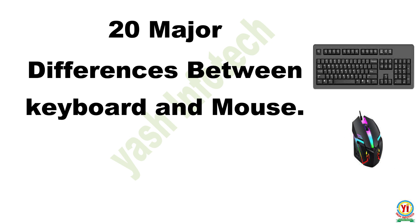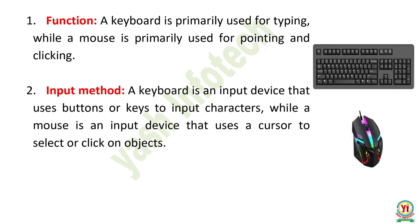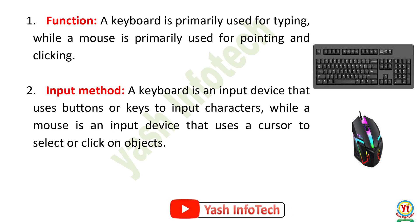Hello friends, today we are going to learn about 20 major differences between keyboard and mouse. Here are some differences: one, function — a keyboard is primarily used for typing, while a mouse is primarily used for pointing and clicking.